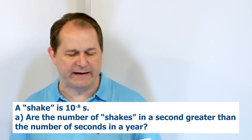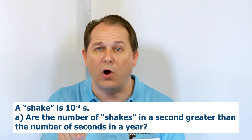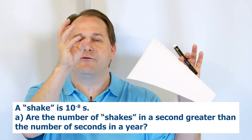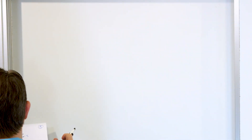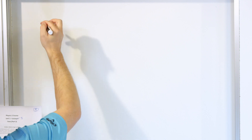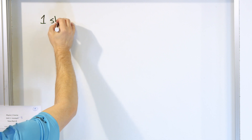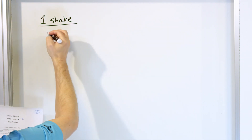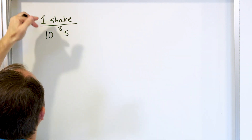A shake is a unit of time equal to 10 to the minus 8 seconds. Are the number of shakes in a second greater than the number of seconds in a year? They actually tell you what units they want: shakes per second and seconds per year. So all we have to do is calculate the number of shakes per second and the number of seconds per year, then compare them. One shake equals 10 to the minus 8 seconds — you can think of this as a unit conversion.